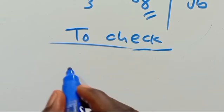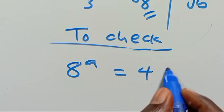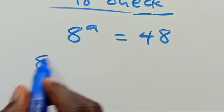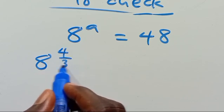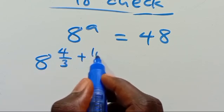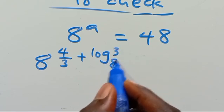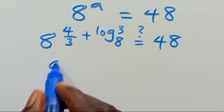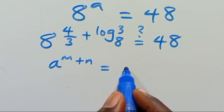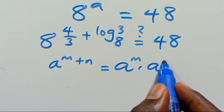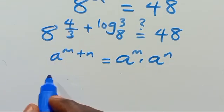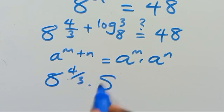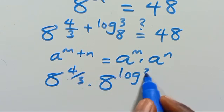Now let us check. We have 8 to the power of a equals 48. When a equals this value, using the property that a to the power of m plus n equals a to the power of m multiplied by a to the power of n, we have 8 to the power of 4 divided by 3, multiplied by 8 to the power of log base 8 of 3.